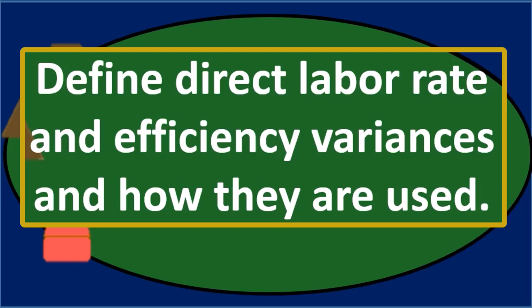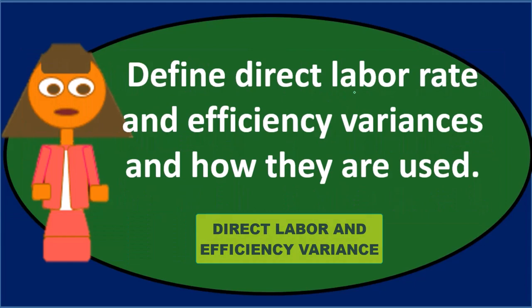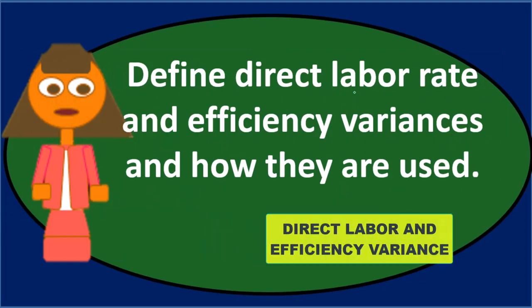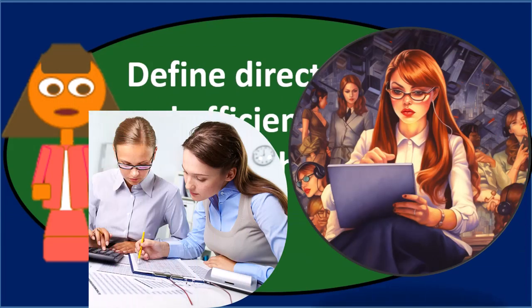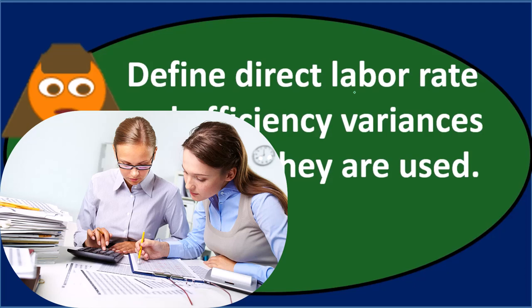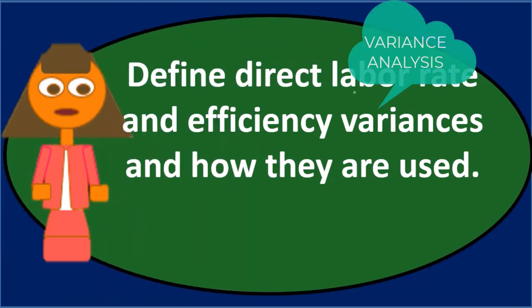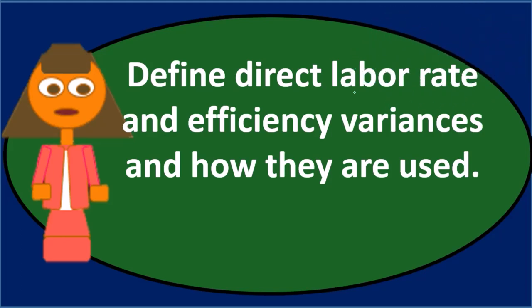So if we go into this process, we can obviously define the direct labor rate variance and the direct labor efficiency variance. We can also take a step back and ask what is variance analysis, and how it fits into budgeting and overarching planning. The direct labor rate and efficiency variances are part of the variance analysis and planning process — comparing to actuals, and then further planning for a new budgetary process.